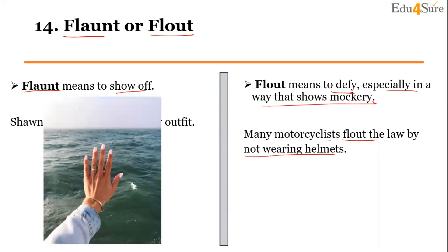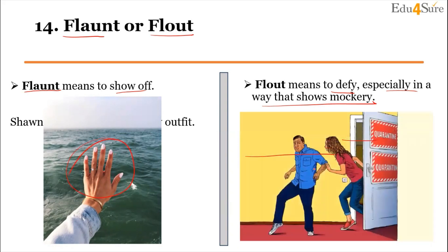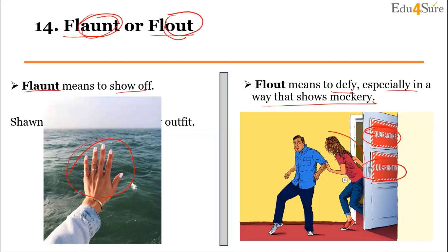In one image, the lady is flaunting — showing off. In another image, two people are breaking the rules — defying, because they went out during quarantine. So they are flouting the law. The trick: flout contains 'out' — to rule out, to go out of the law or rule.